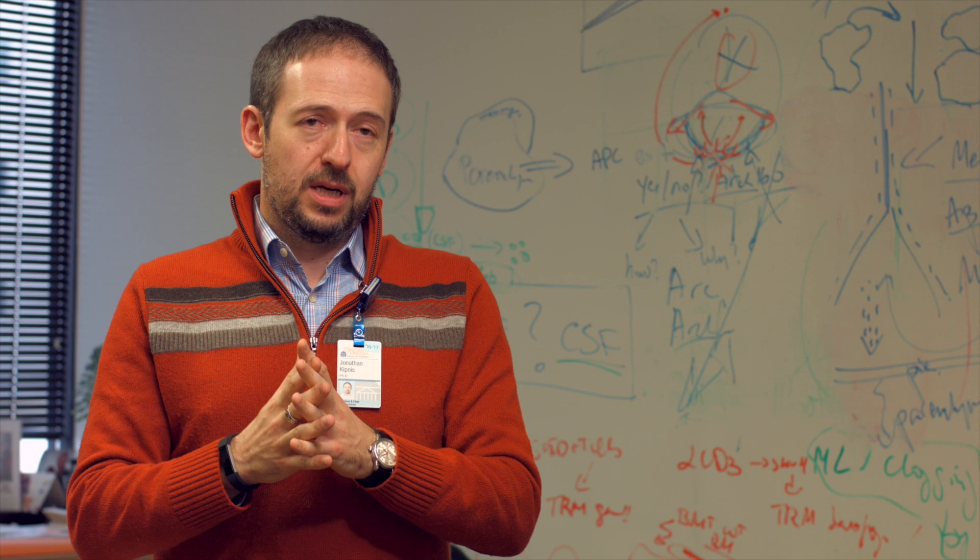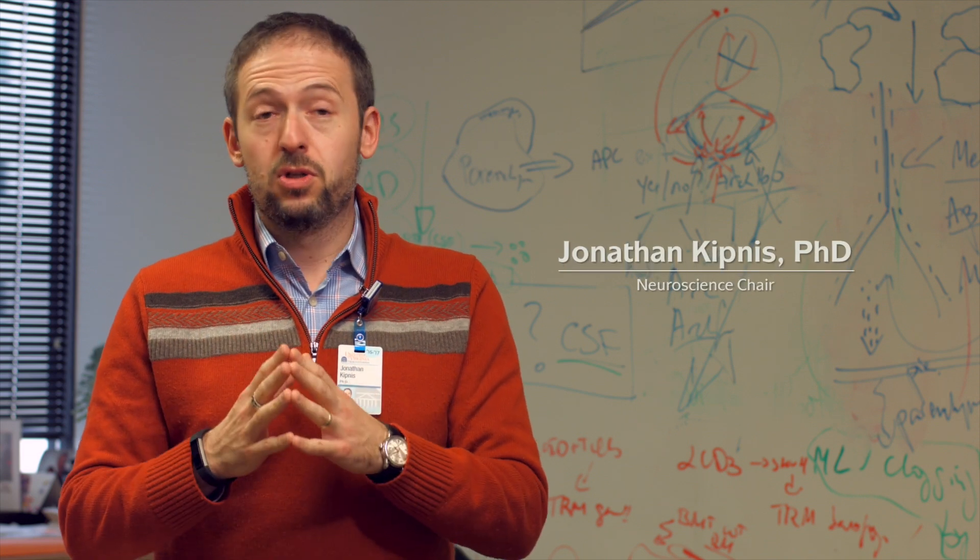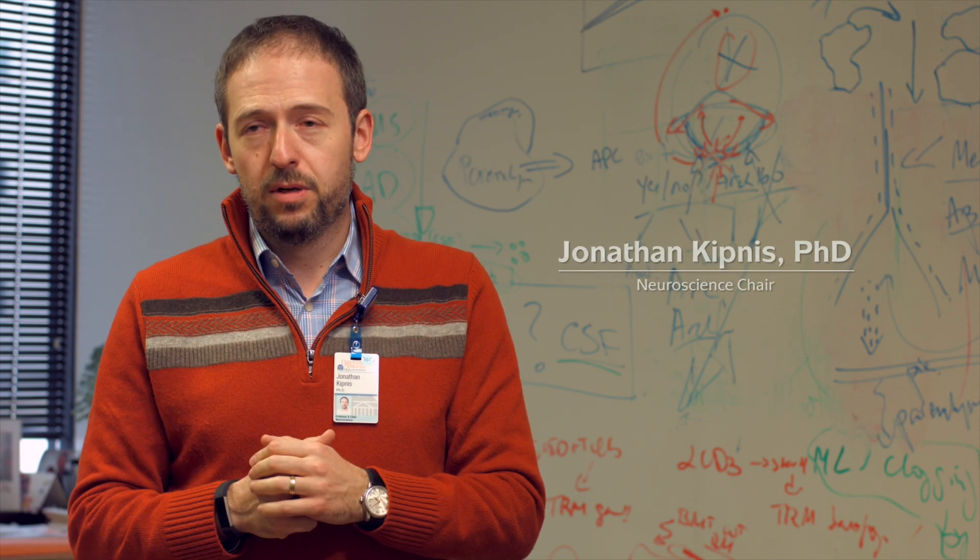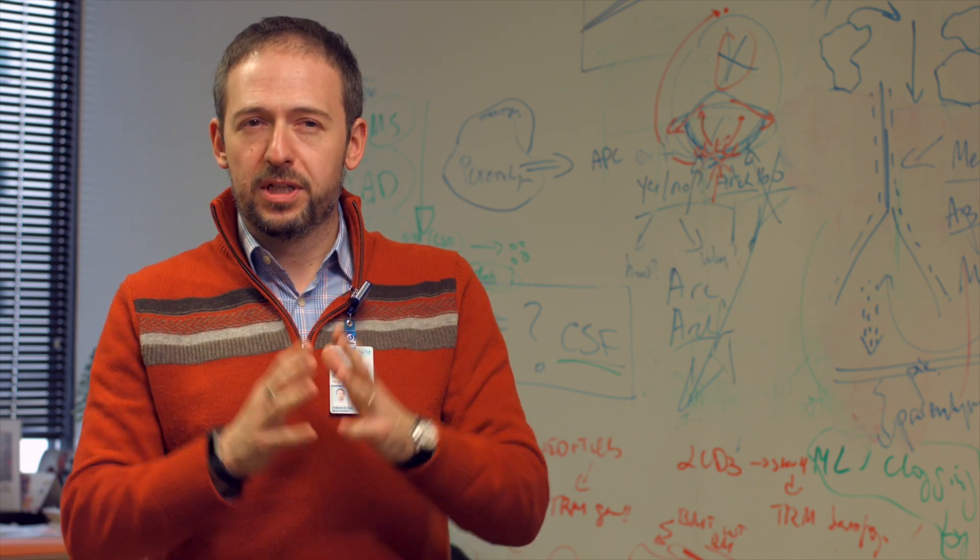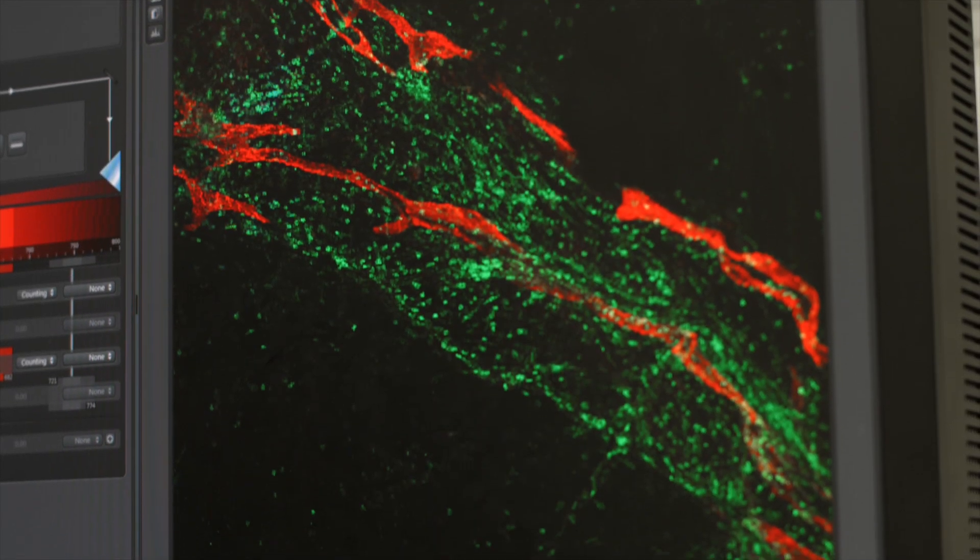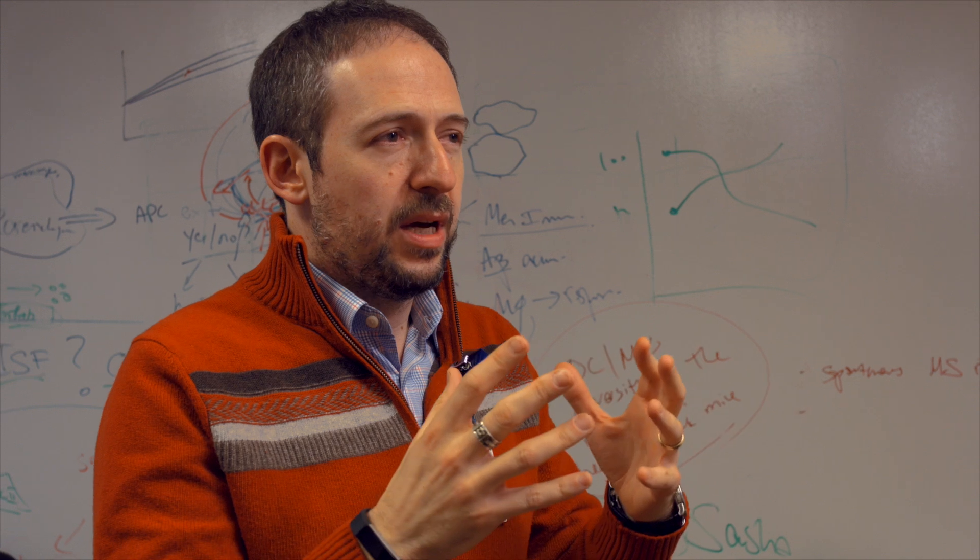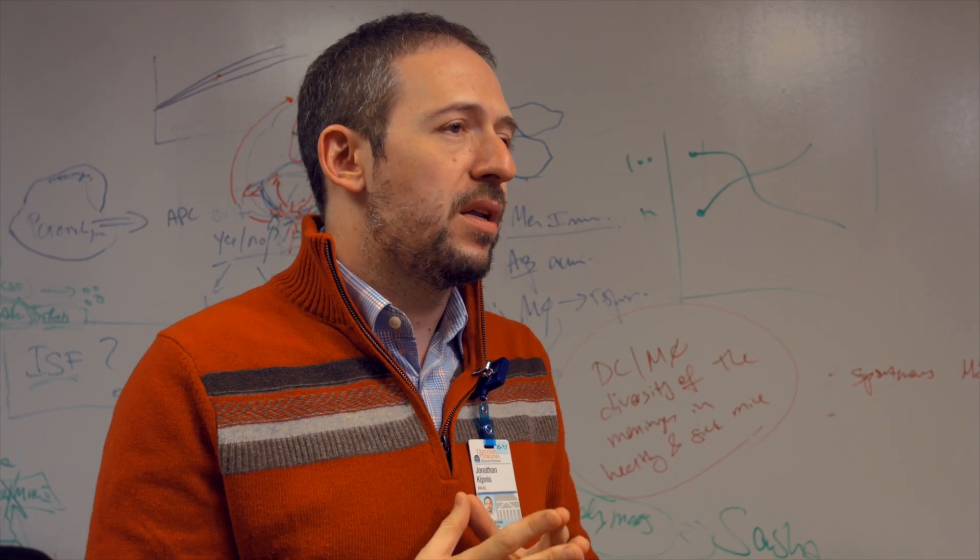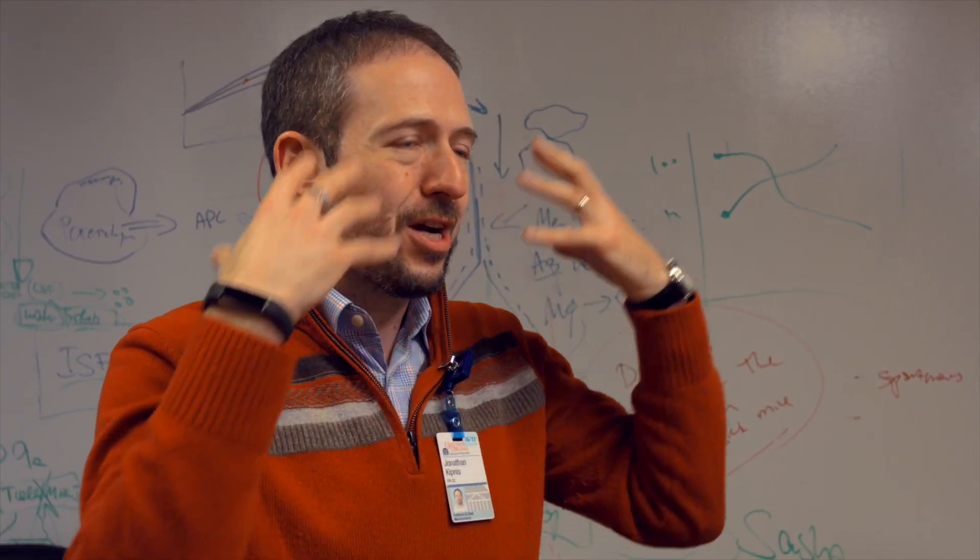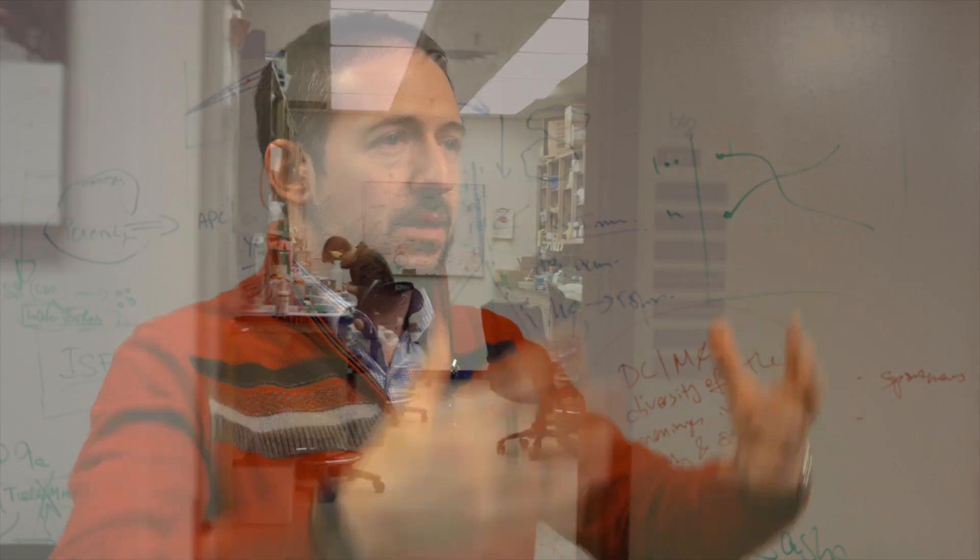The idea was that the central nervous system, the CNS, does not have lymphatic vasculature, which is kind of true because inside the brain we do not have vessels per se. But the idea was, how does the brain drain? And we really didn't understand how the drainage, how the cleaning of the brain is occurring.